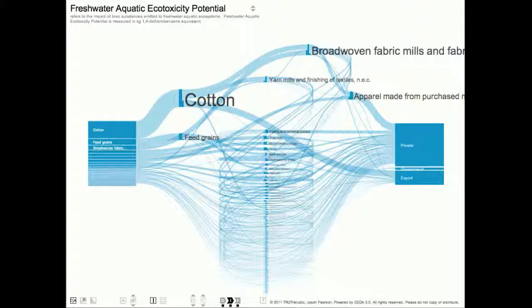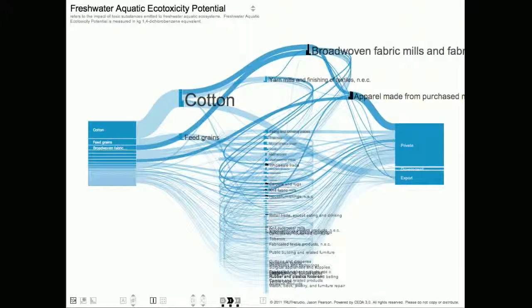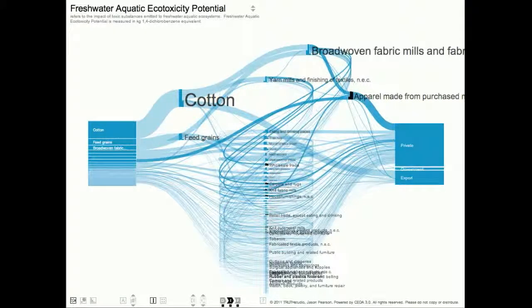Another helpful trick is selecting all of the downstream sectors of a specific sector by holding down the option or alt key while clicking that sector. For example, if I hold down the option or alt key while clicking on a sector like broadwoven fabric mills, all of its downstream sectors will also be selected. I can then deselect the fabric mills sector itself by holding down the shift key while I click that sector. I now have all of its downstream sectors selected.